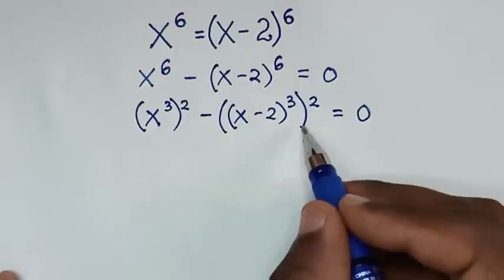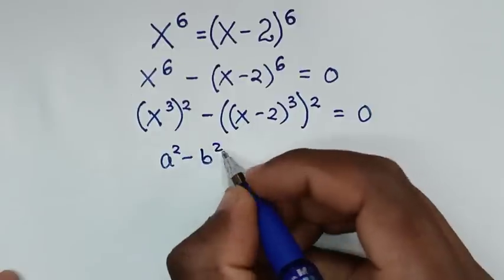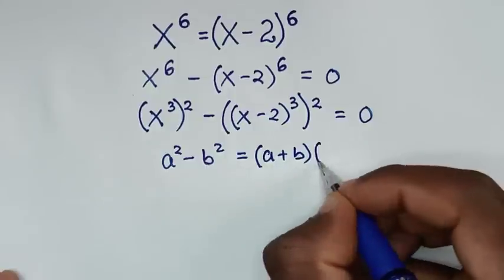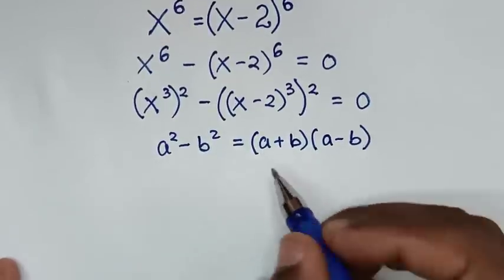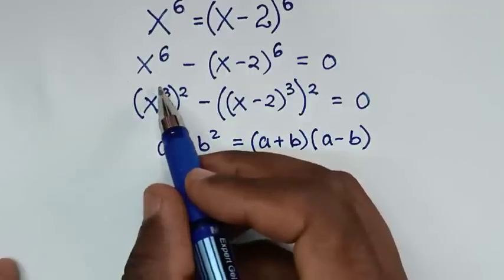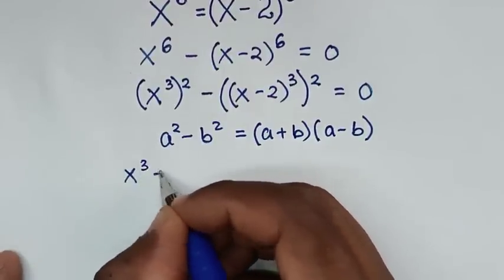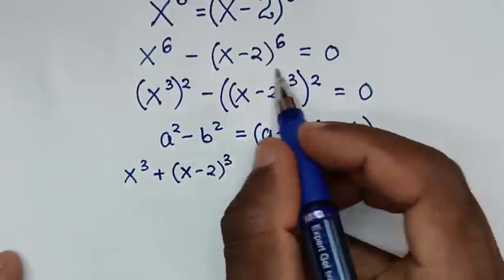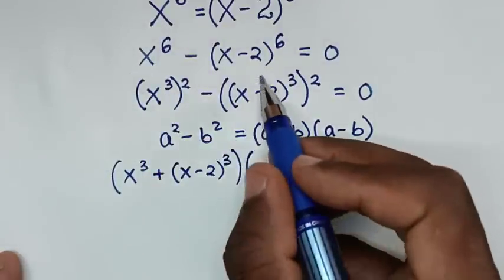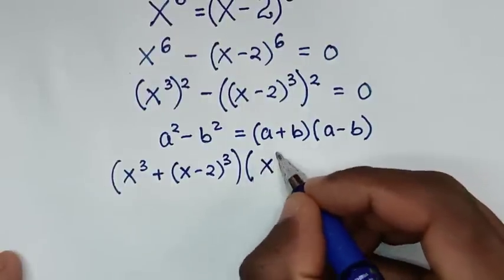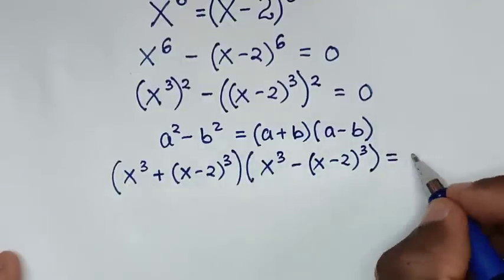This is in the form of a perfect square, so we apply the difference of squares rule: a squared minus b squared equals a plus b, bracket, times a minus b, bracket. Applying this form, we get x to the power of 3 plus x minus 2 bracket to the power of 3, times x to the power of 3 minus x minus 2 bracket to the power of 3, equals 0.